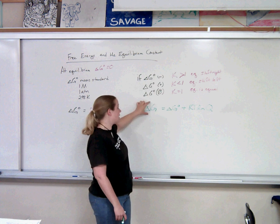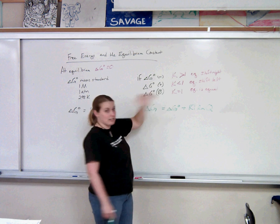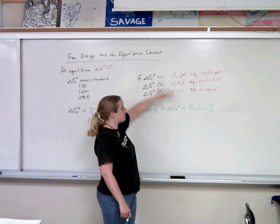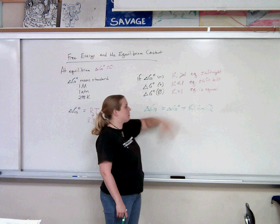So if that Gibbs winds up being negative, then our reaction is proceeding forward to get to equilibrium. If that Gibbs winds up being positive, then our reaction is proceeding in reverse to get to equilibrium. And if that Gibbs winds up being zero, then we're at equilibrium.